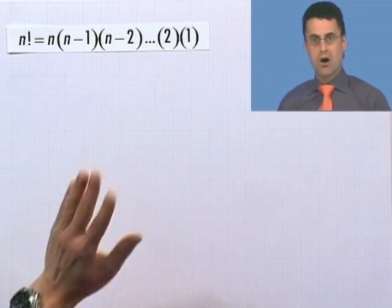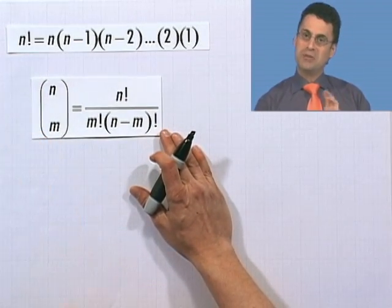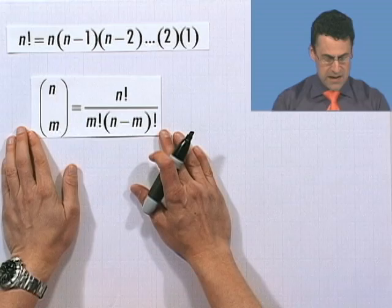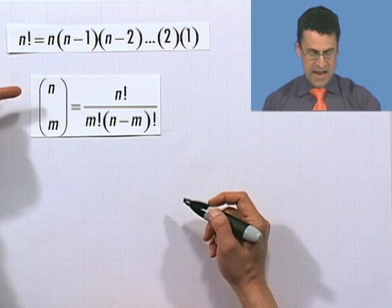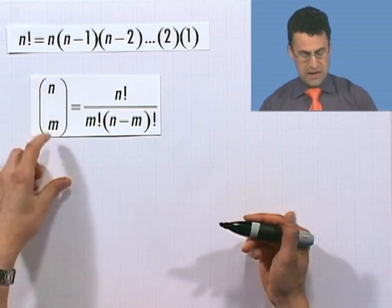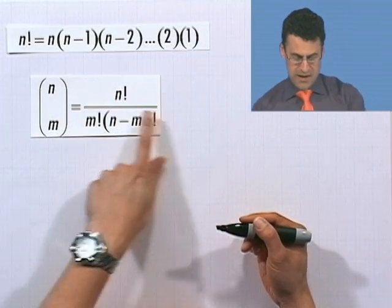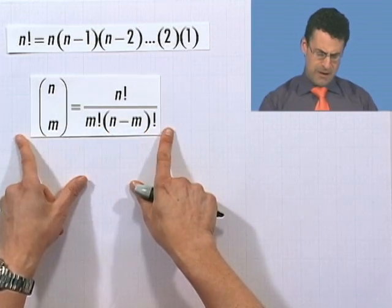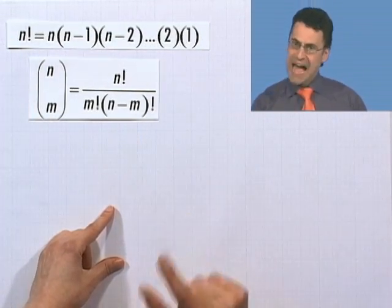Now you're ready for the actual binomial coefficient. It's called n choose m, and it's written with n on top and m on bottom — but it's not a fraction. The definition is n factorial divided by m factorial times n minus m factorial. It's a peculiar definition, but this gives exactly the binomial coefficients. Let me show you with some examples of how to compute this.